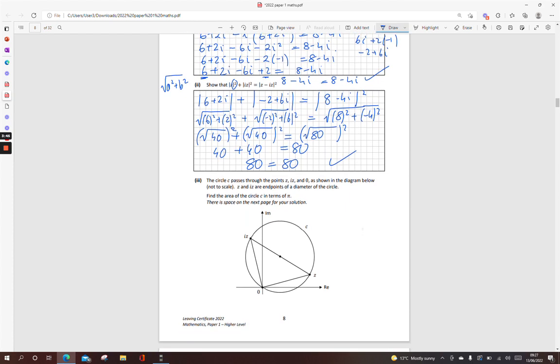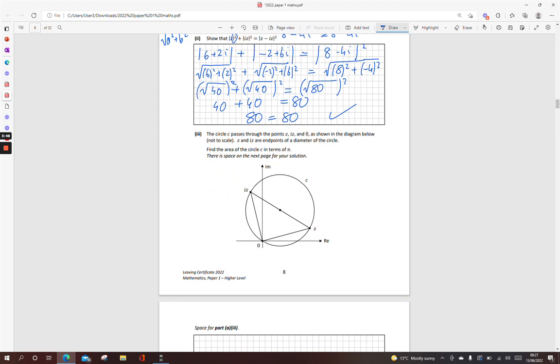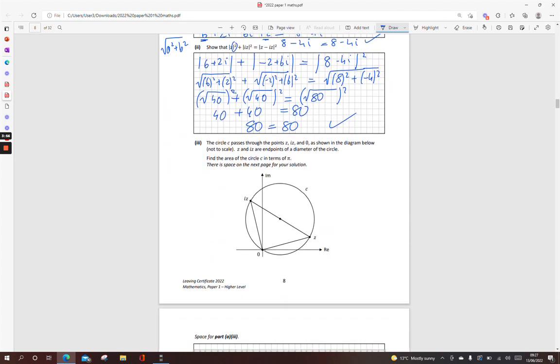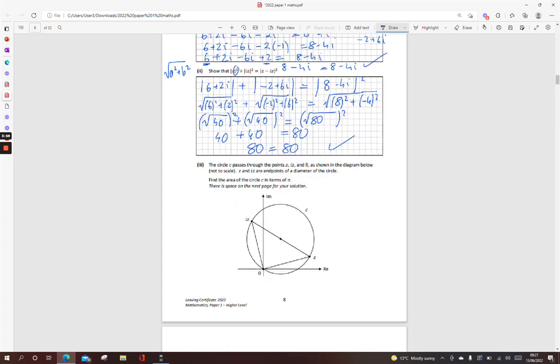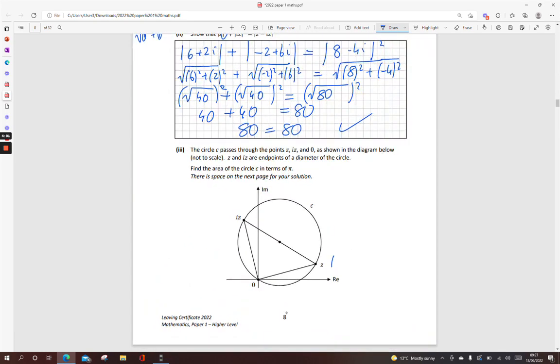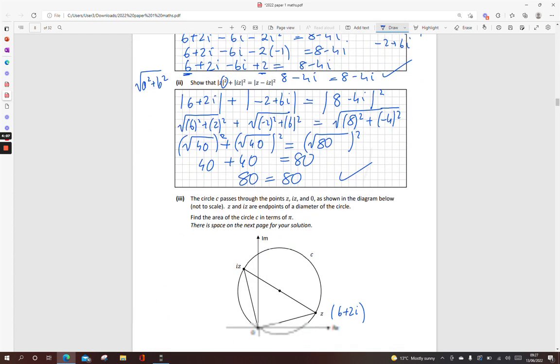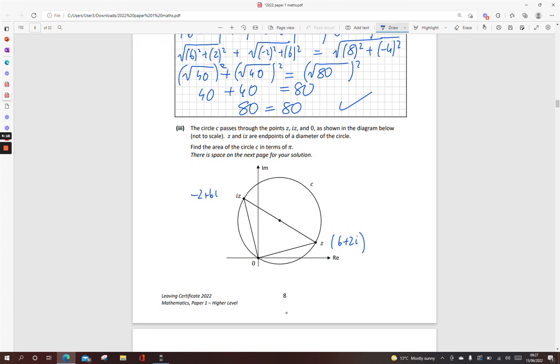Now, I don't like to look at this. A circle question, geometry question, I don't know, is thrown into complex numbers. So, the circle C passes through the point z, and z was 6 plus 2i. Az, which I worked out up here, to be minus 2 plus 6i, which seems right, because your real bit is minus 2. I'm over here in this axis, so you make minus 2. And 6 up. And 0, as shown in the diagram below.